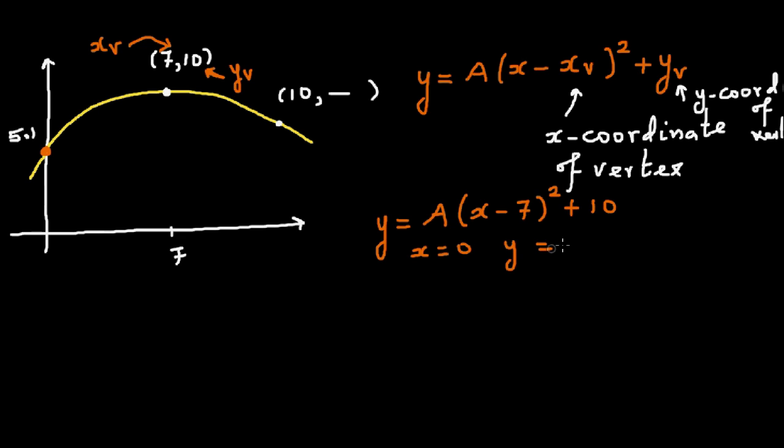So the y-intercept tells me that when x is 0, y is 5.1. So let's put this in this equation and try to find the value of a. In place of y I'm going to put 5.1: 5.1 is equal to a times 0 minus 7 the whole squared plus 10.